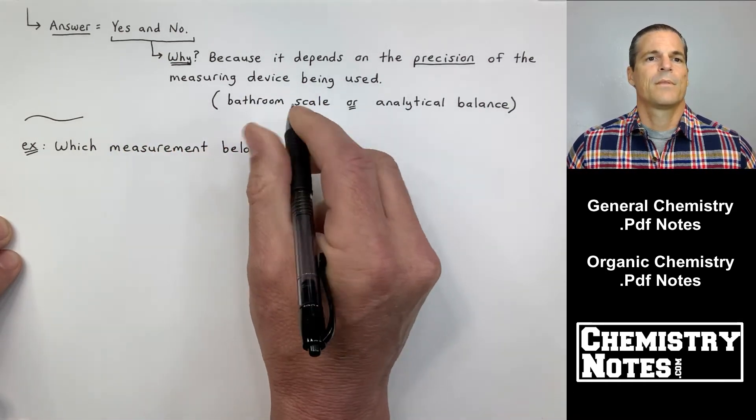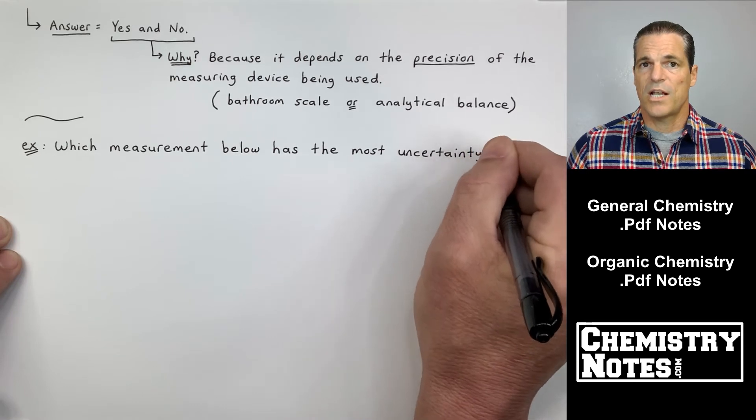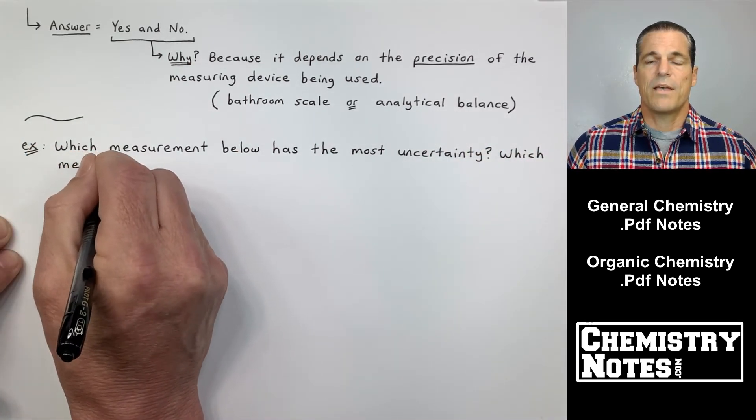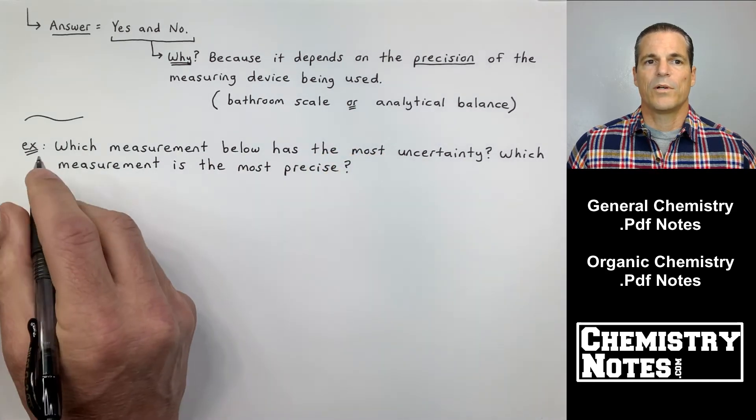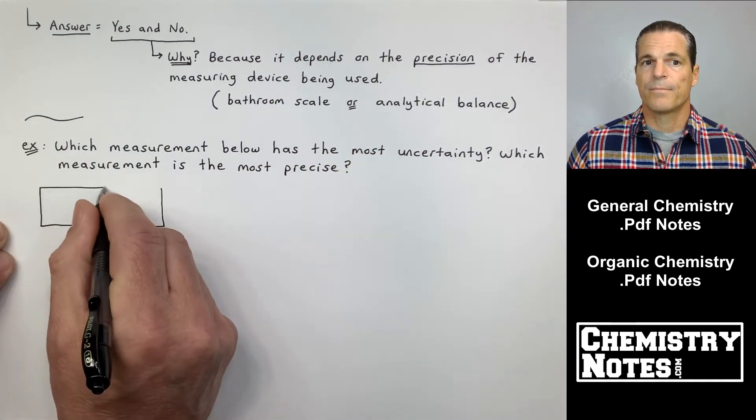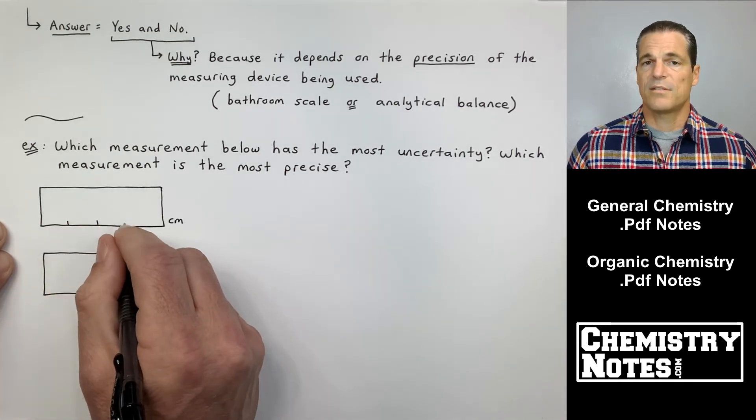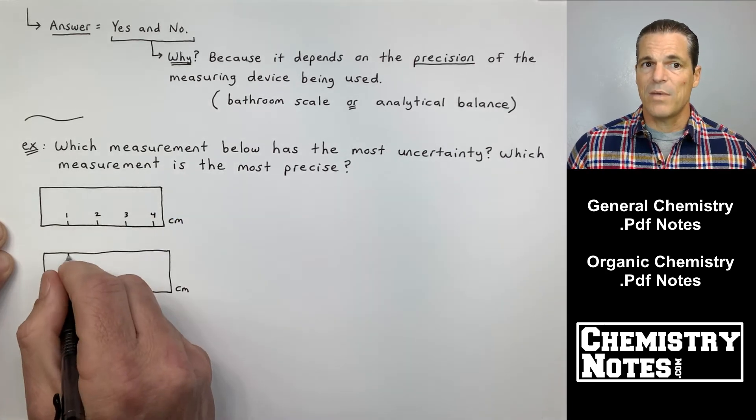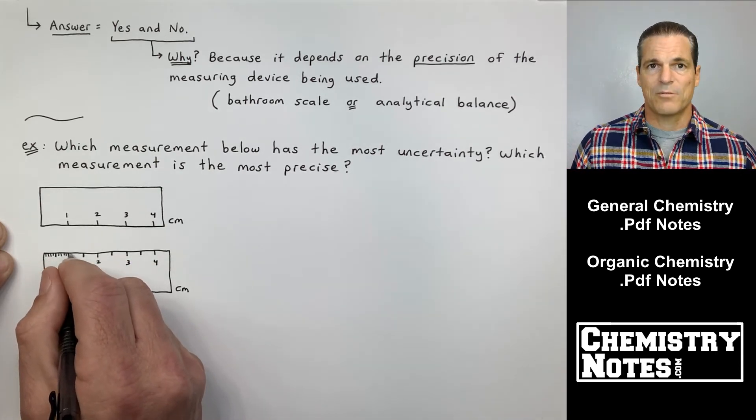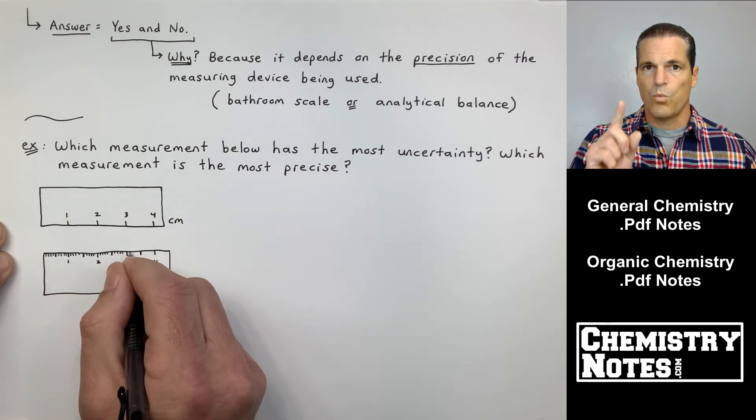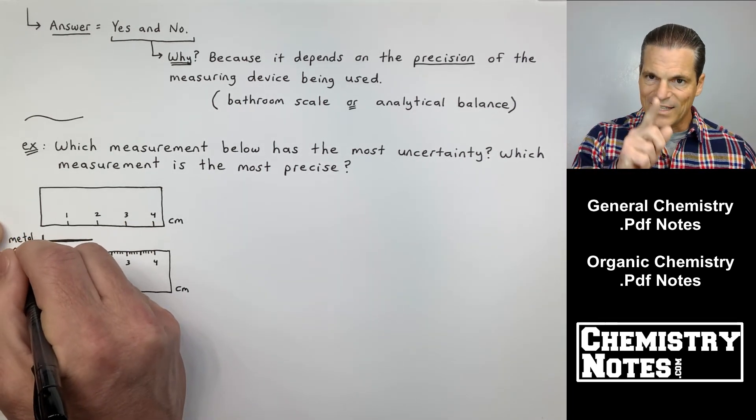All right. I got that little squiggly line there, which means I'm doing a different example. Now it says, which measurement below has the most uncertainty associated with it? Which measurement is the most precise? Give me some time here as I sketch these two rulers. These rulers are both in centimeters, but the ruler on top, it only gives me one, two, three, and four. Those are my little graduations or tick marks. The ruler on the bottom is showing me the tenths place. So the ruler on top is only showing me the ones place, one, two, three, four. The ruler on the bottom is showing me tenths. In between each number, one, two, three, and four, I've got 10 little tick marks.